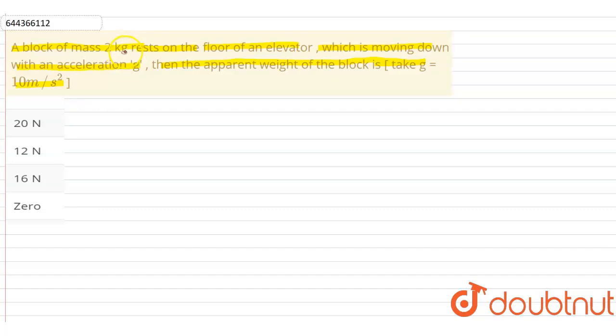In this question we have to find the apparent weight of the block. Apparent weight is equal to normal reaction of a body. So simply we have to calculate the normal reaction of the block.